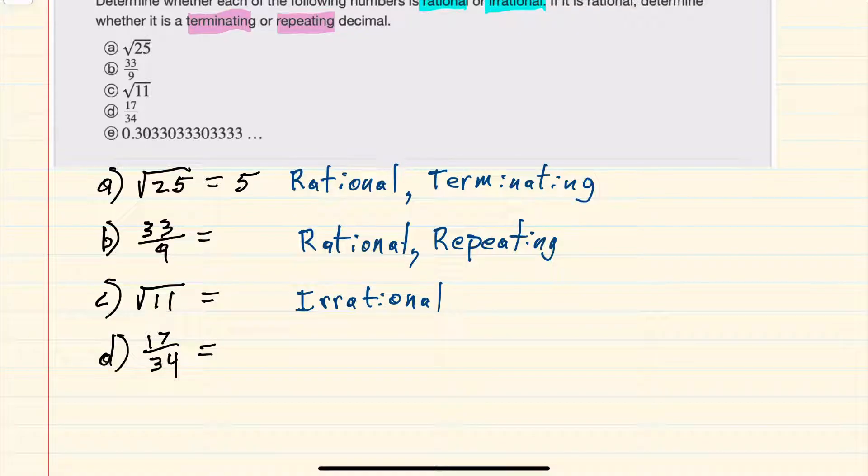For d, we have the fraction 17 over 34, and this is a fraction that reduces. We could simplify the fraction to just one half, or as a decimal, 0.5.